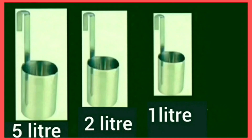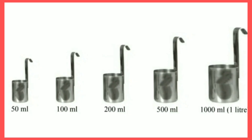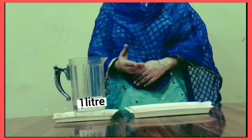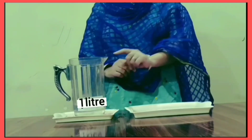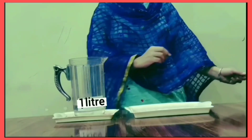Larger quantity of liquid or liquid less than 1 litre is measured with millilitre cans. Now let's see how many millilitres are there in 1 litre.